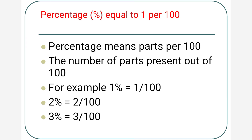Number 1 is percentage. Percentage means parts per hundred — the number of parts present out of hundred. For example, 1% is equal to 1 upon 100, 2% is equal to 2 upon 100, and in the same way, 3% is equal to 3 upon 100.